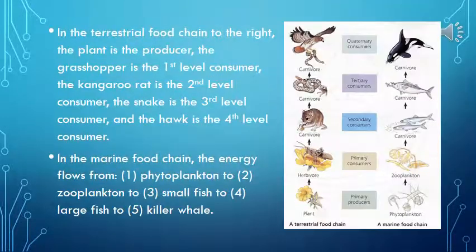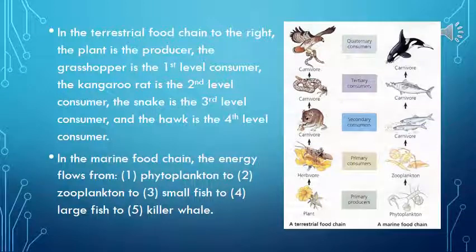In the terrestrial food chain shown, the plant is the producer, the grasshopper is the first-level consumer, the kangaroo rat is the second-level consumer, the snake is the third-level consumer, and the hawk is the fourth-level consumer. In the marine food chain, energy flows from phytoplankton to small fish to large fish to killer whale.